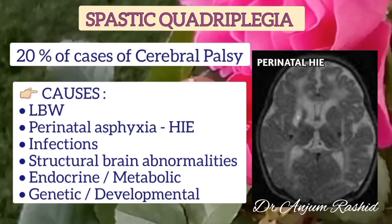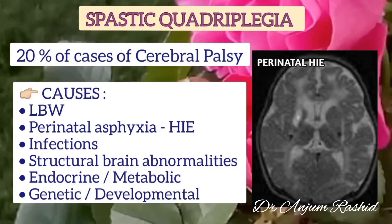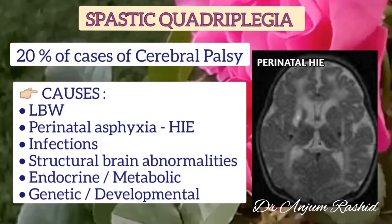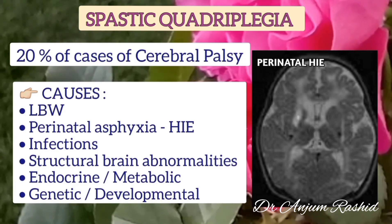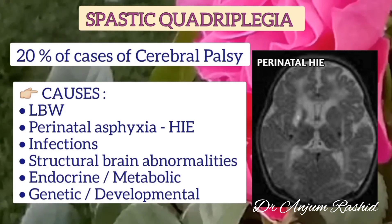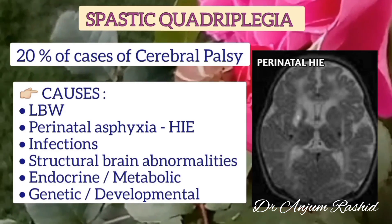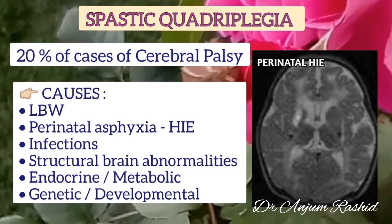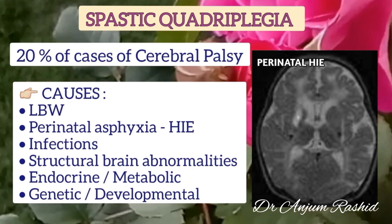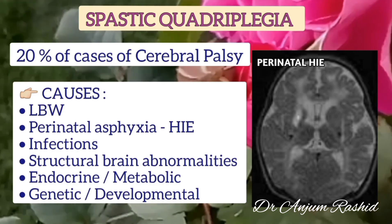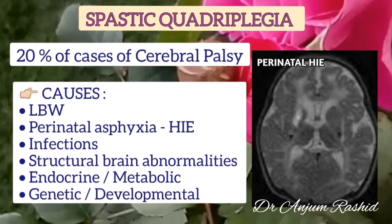Spastic quadriplegia accounts for 20% of cerebral palsy cases. Risk factors include low birth weight, perinatal asphyxia, infection, structural brain abnormalities, endocrine or metabolic causes, and genetic or developmental disorders.